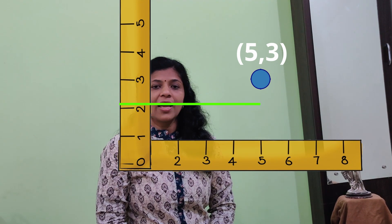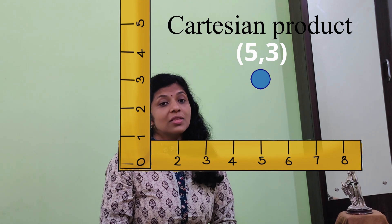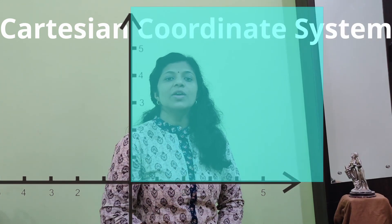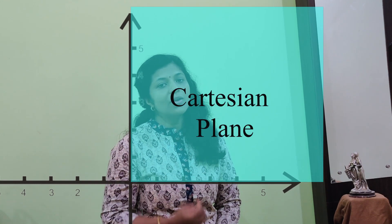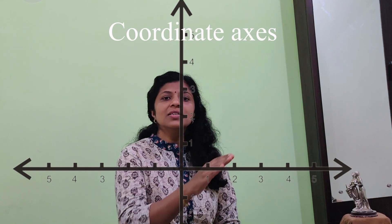This means that the point is 5 units from the zero on the X axis and 3 units from the zero on the Y axis. This pair of numbers, which is the address of this point, is what we call the coordinate of the point or the Cartesian coordinates of the point. This system of locating a point using perpendicular axis is called the Cartesian coordinate system. The plane where the point exists is called the Cartesian plane or the coordinate plane. The perpendicular axis are called the coordinate axis. This is the X axis and this is the Y axis. The address of a point on this plane is written as two numbers in brackets separated by a comma — the coordinates of this point.